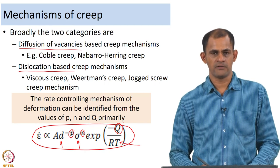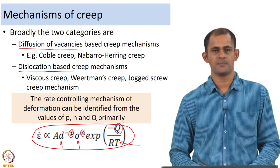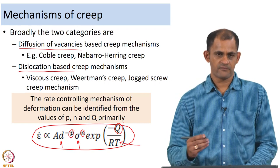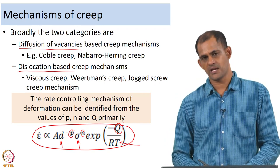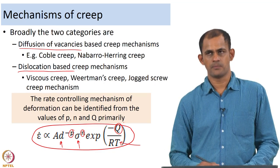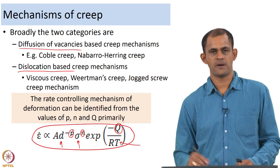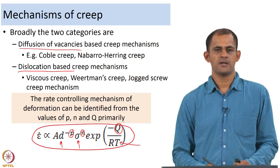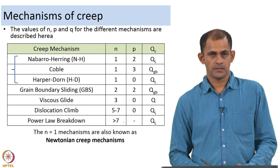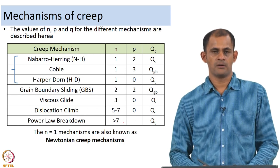If you know the values of P, N, and Q you will be able to tell which mechanism of creep is actually controlling the deformation process. For different values of P, N, and Q — for example if creep is controlled by diffusion of vacancies, you will have a certain set of P, N, and Q values, whereas if controlled by dislocation-based mechanisms you will have another set.